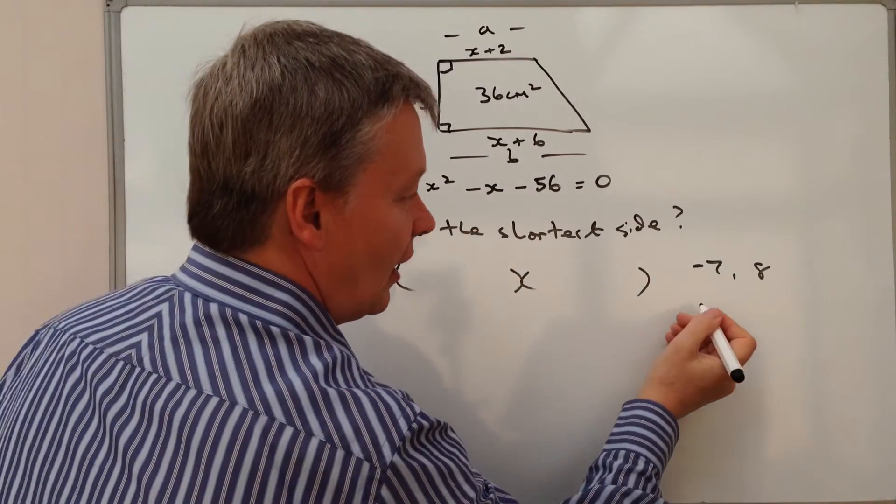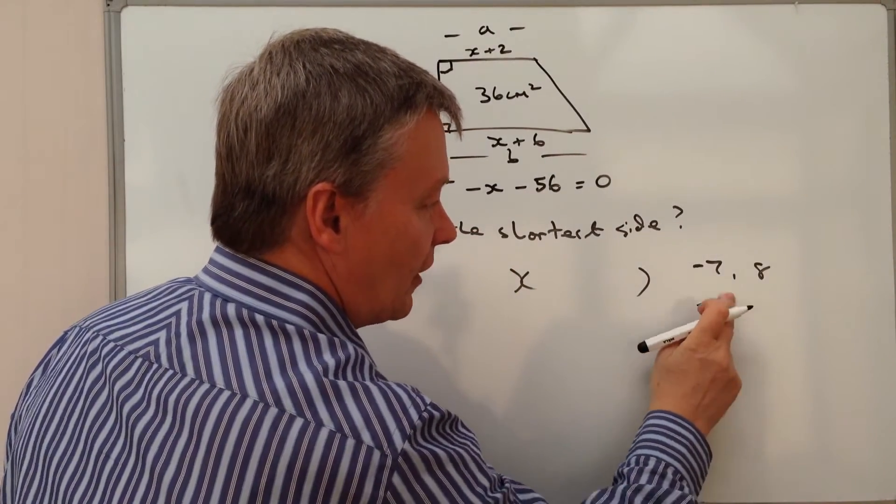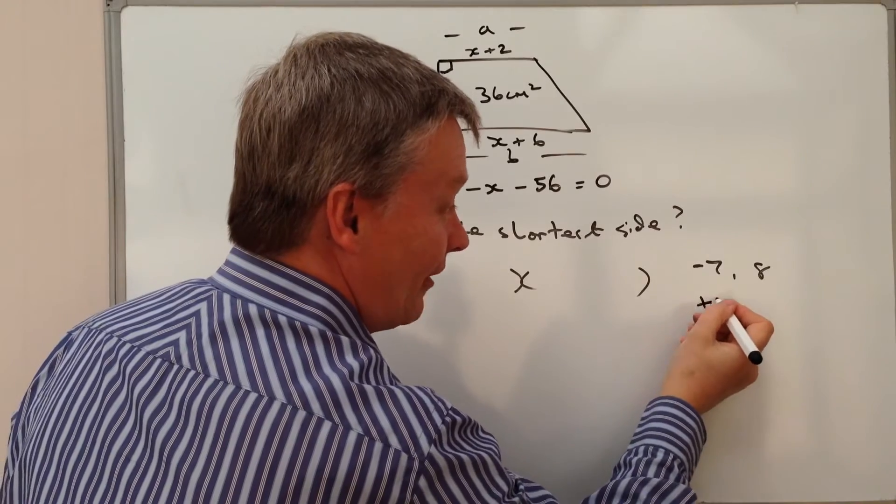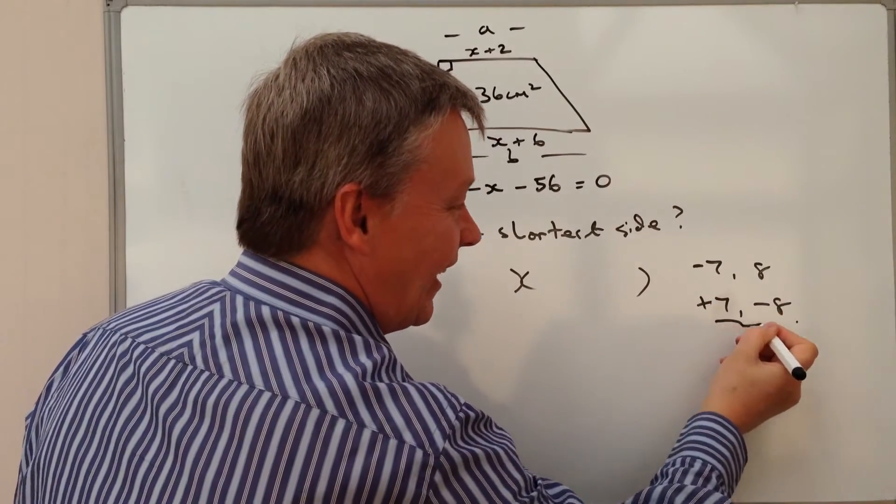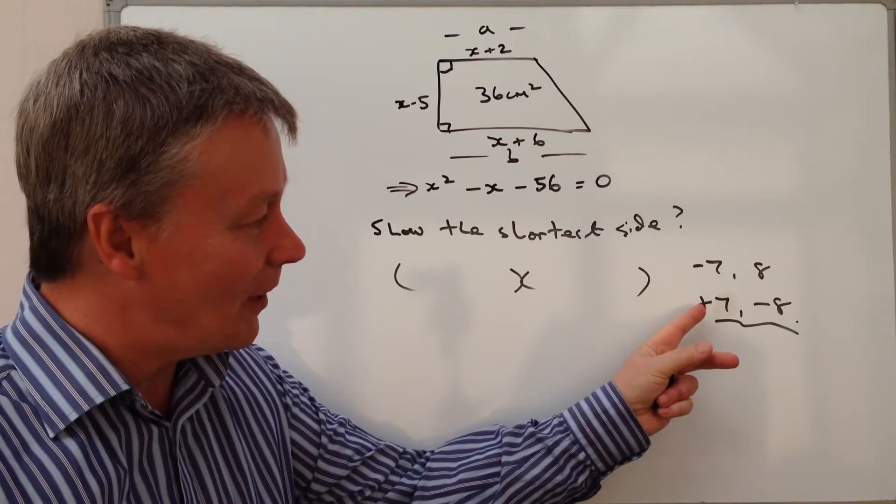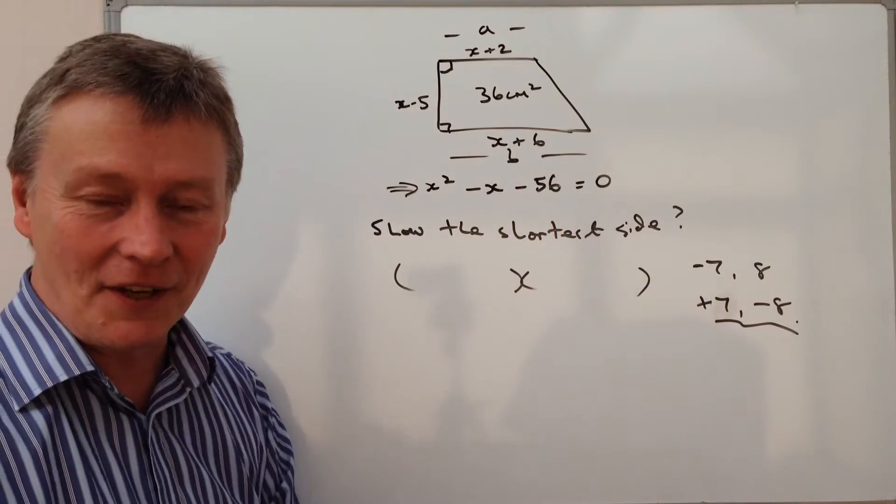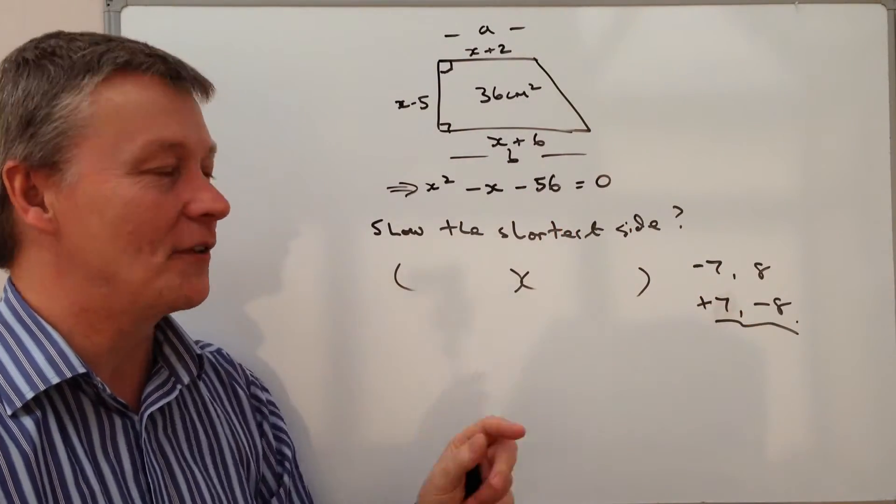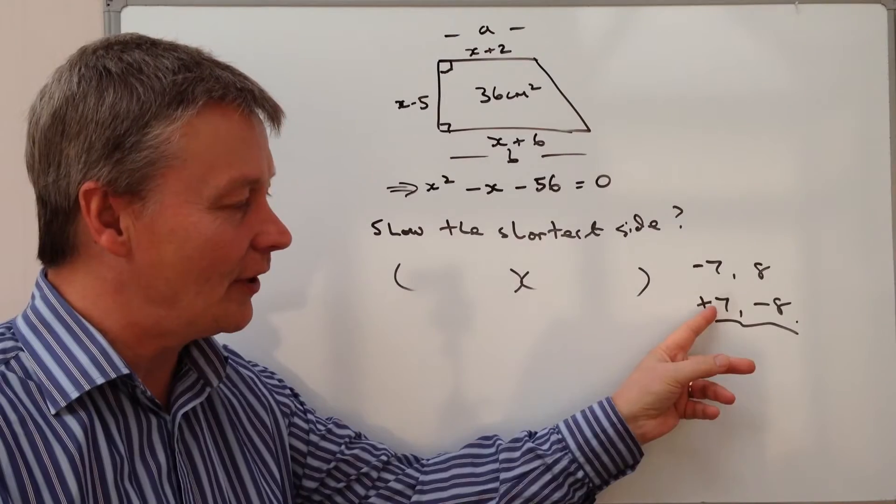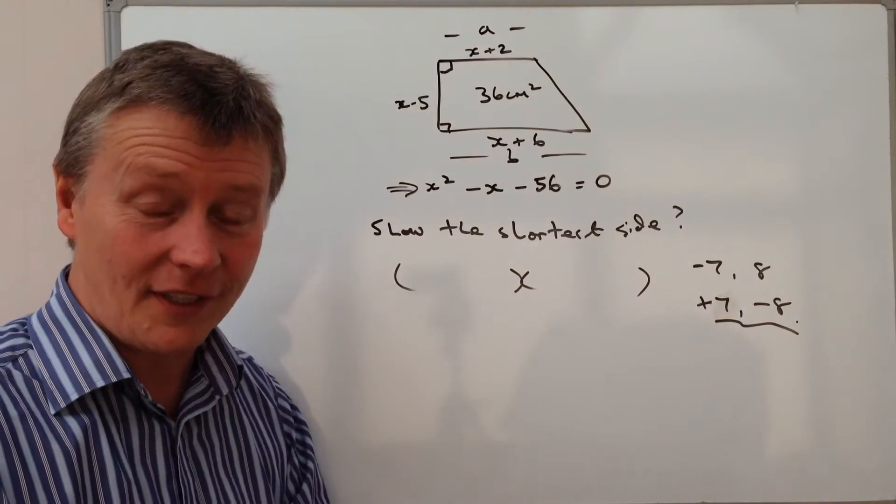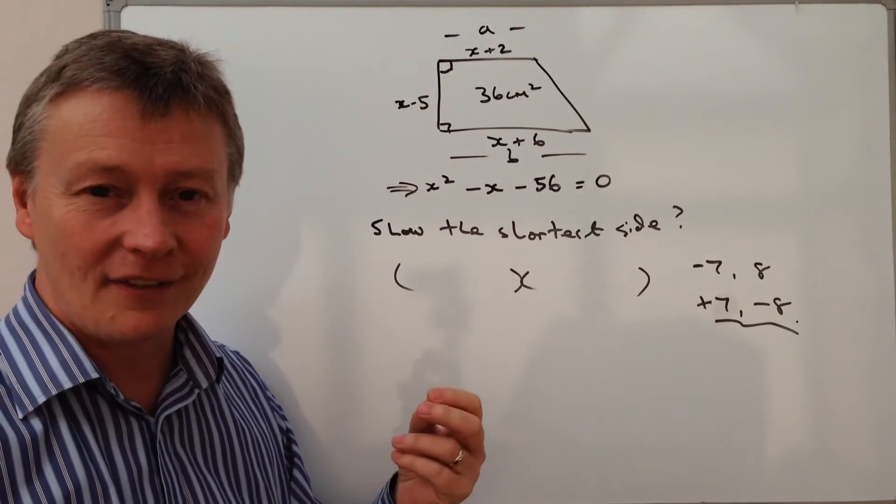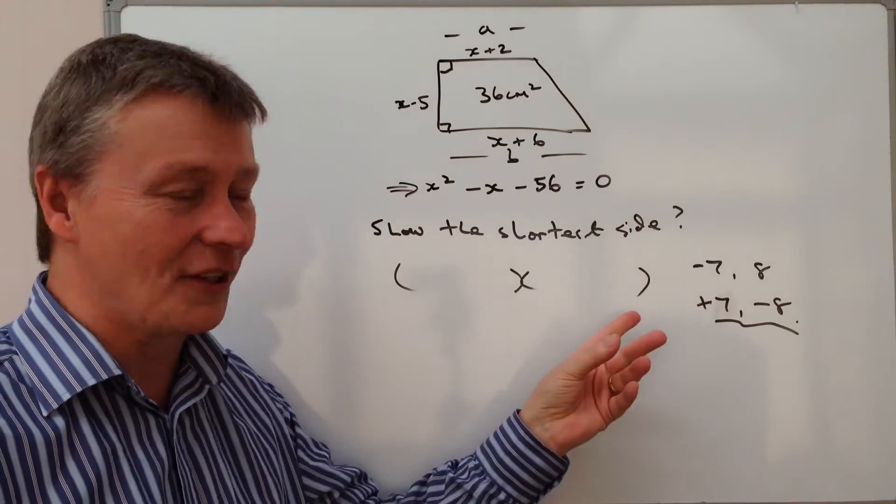It's going to be in answer to the factorisation plus 7 and minus 8. Plus 7 and minus 8 because when you multiply a positive and a negative together you get a negative. So 7 times 8 is 56, negative 56 is fine. When you add them together I've got 7 plus negative 8. Well, 7 plus negative 8 is the same as saying 7 minus 8. So 7 minus 8 is minus x or minus 1. So that's going to work for me.